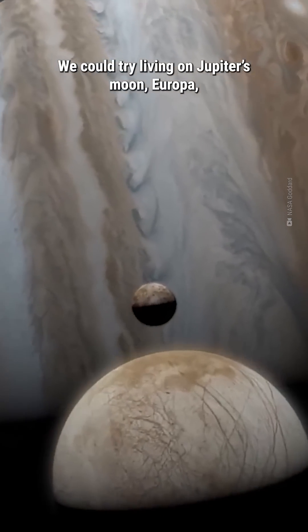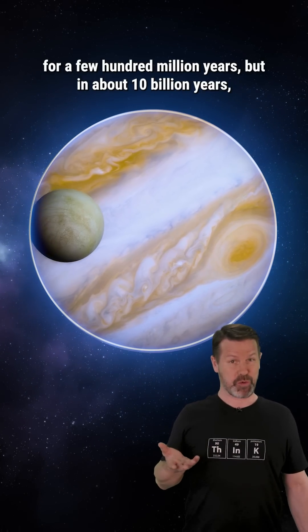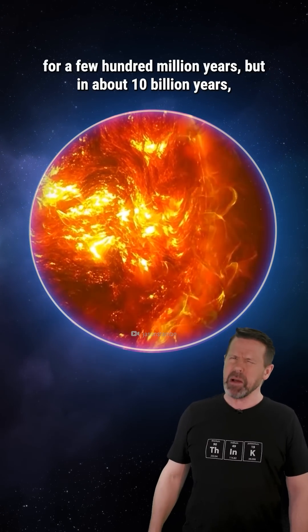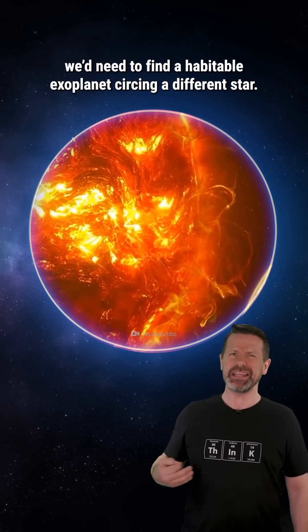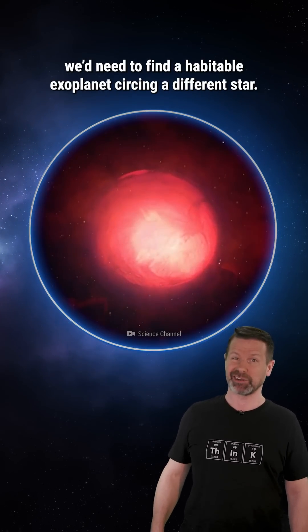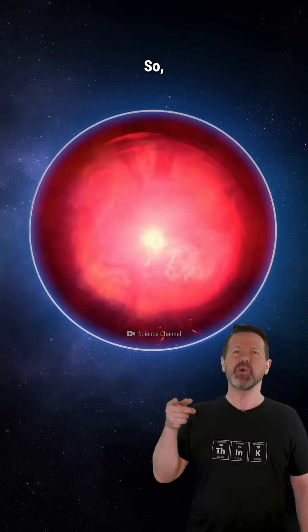We could try living on Jupiter's moon, Europa, for a few hundred million years, but in about 10 billion years, we'd need to find a habitable exoplanet circling a different star.